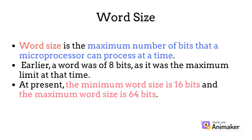Starting with word size. Word size is the maximum number of bits that a microprocessor can process at a time. Earlier, a word was of 8 bits as it was the maximum limit at that time. At present, the minimum word size is 16 bits and the maximum word size is 64 bits.